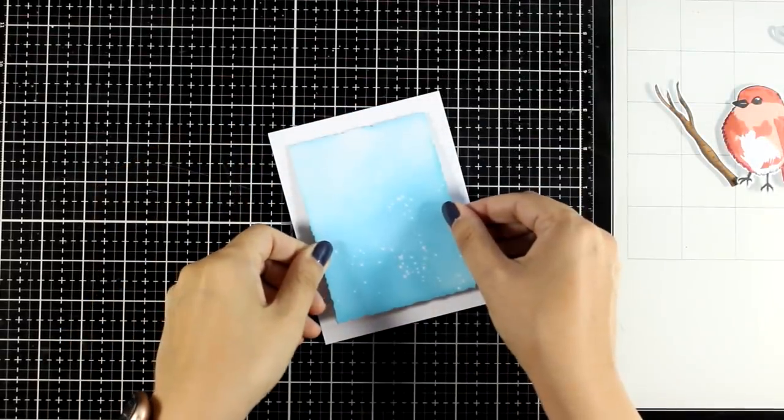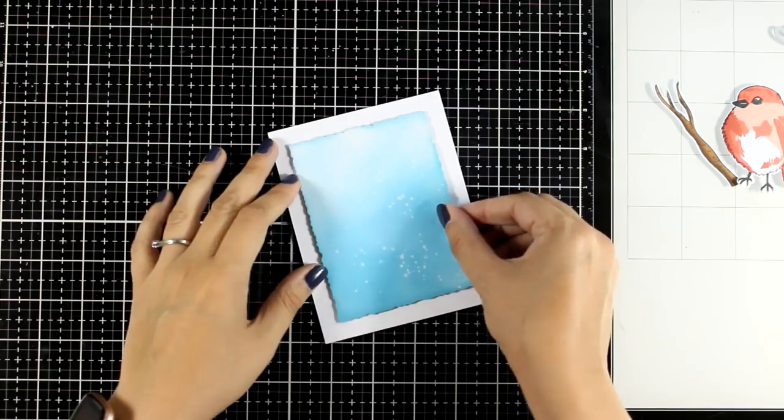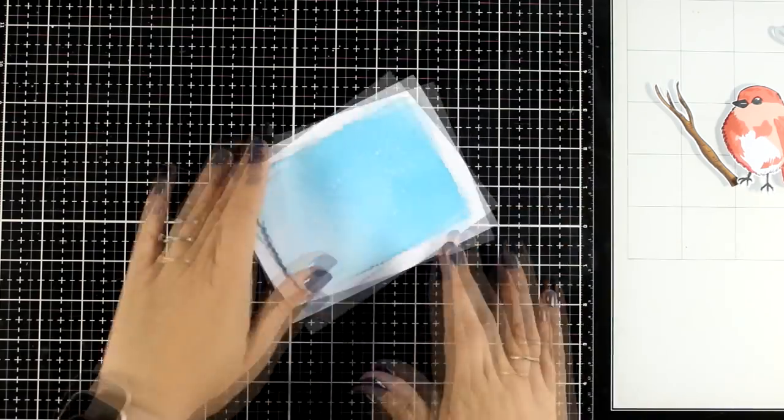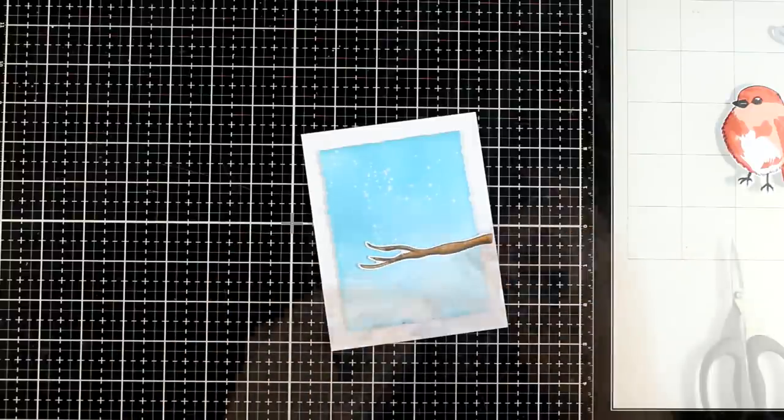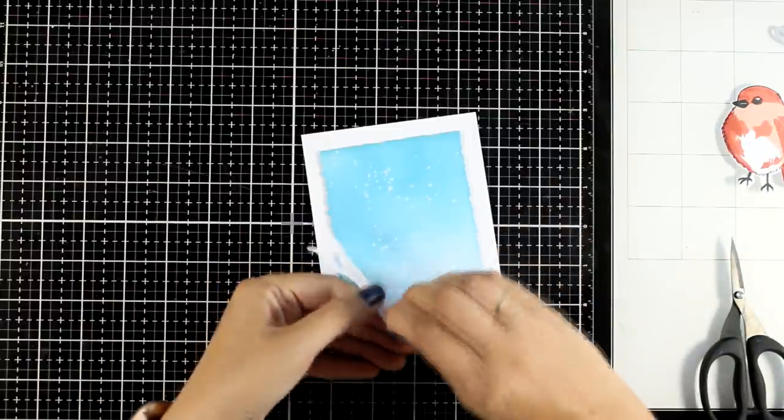And now it's time to assemble my card. I have an A2 panel that's 4 1/4 by 5 1/2. On top I'm sticking my bluish panel and I'm keeping the darker shade at the top.